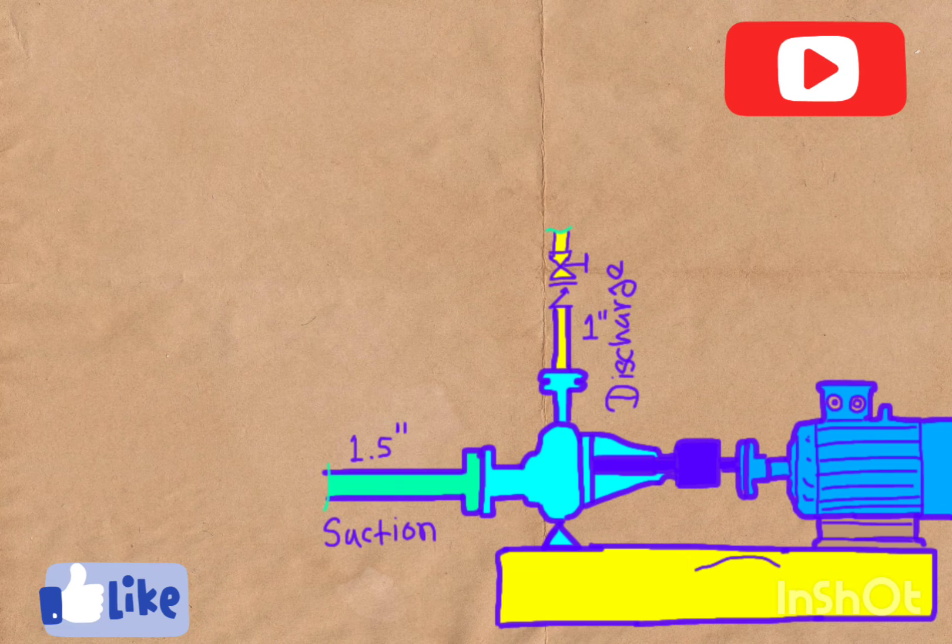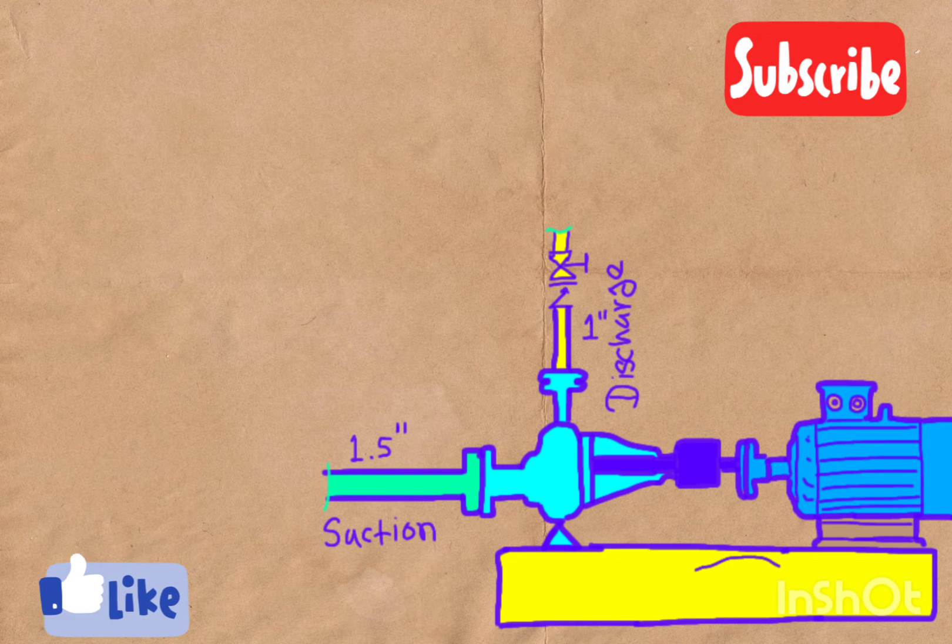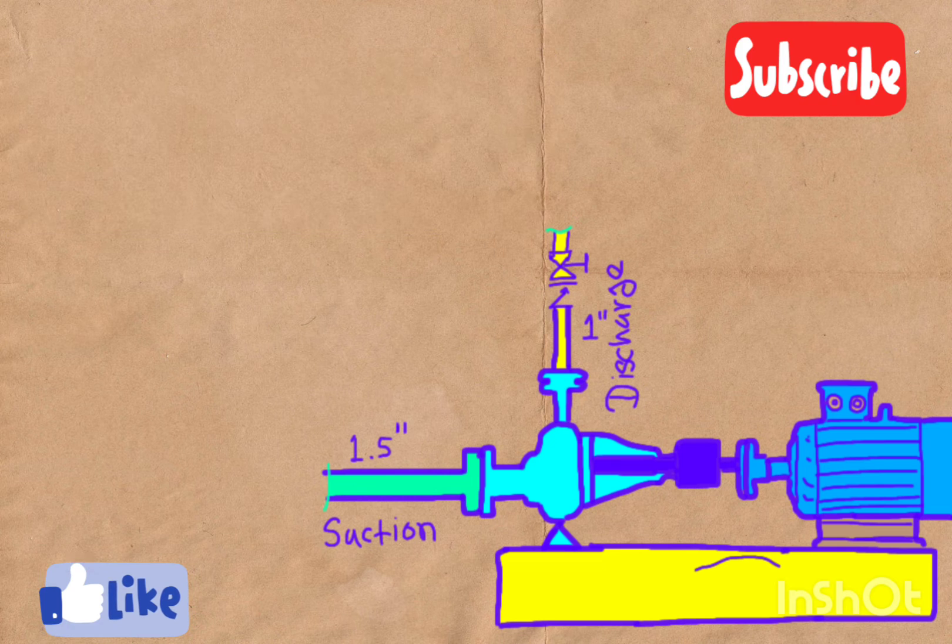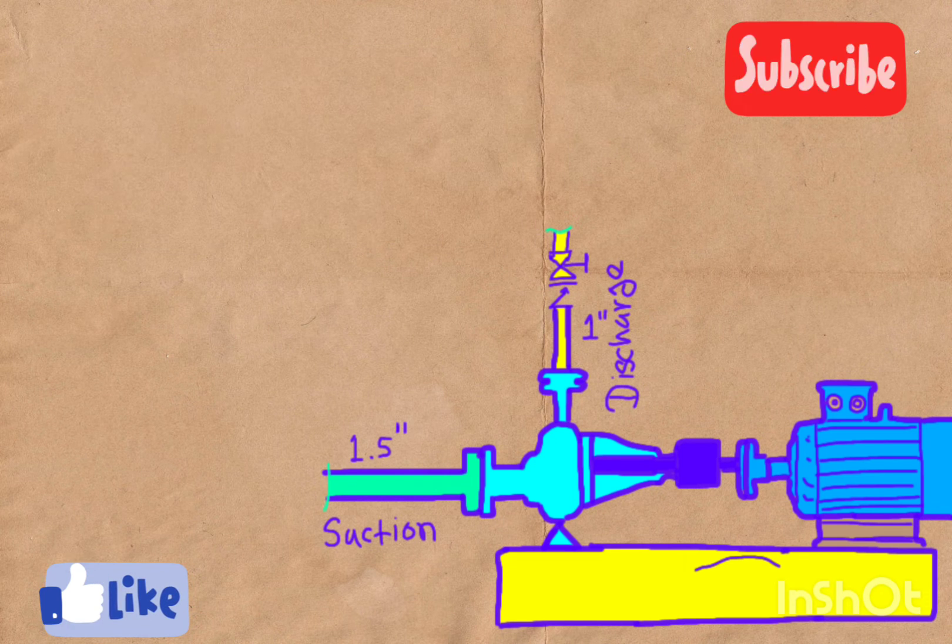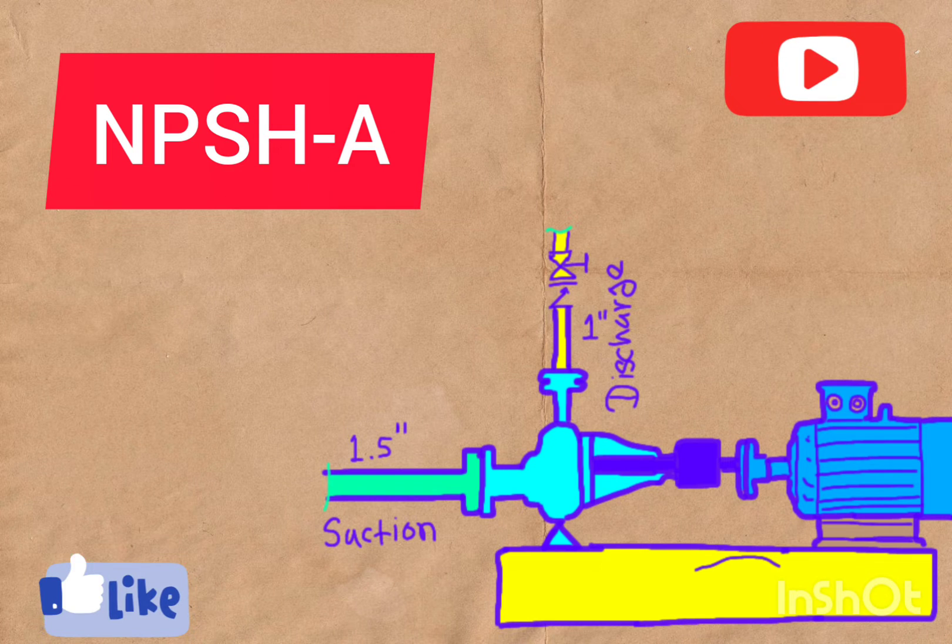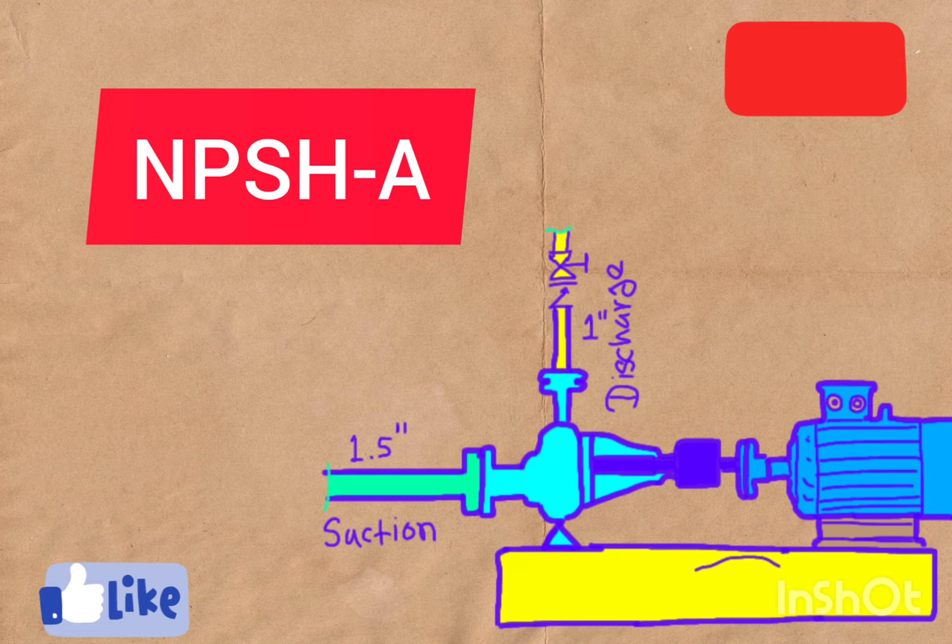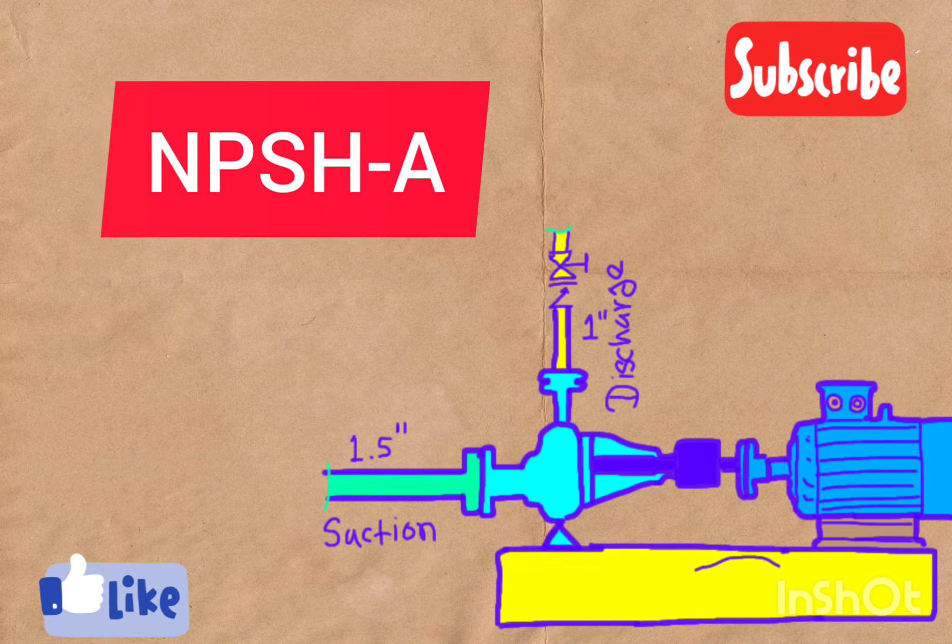So the first reason is cavitation. Now let's move toward the second reason, and that is NPSH-A. Imagine your pump has a bodyguard named NPSH-A - it stands for Net Positive Suction Head Available.